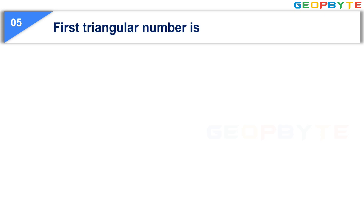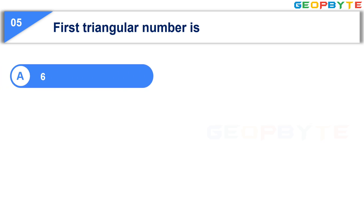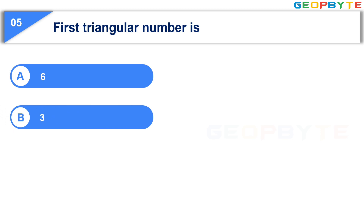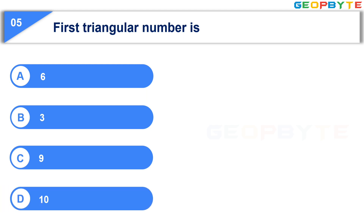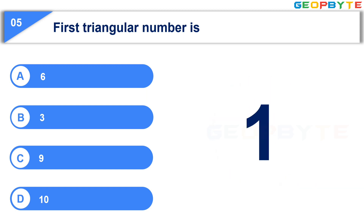Moving to the next question: The first triangular number is. Option A: 6. Option B: 3. Option C: 9. Option D: 10. Your time starts now. Your time is up and the correct answer is Option B: 3.